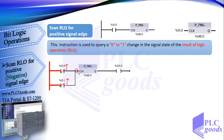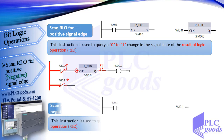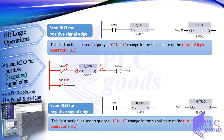This instruction detects the change at its input and generates a pulse, making Q0.0 on for only one program cycle, which is about 5 ms. There is also an instruction used to query a one-to-zero change in the signal state of the RLO.